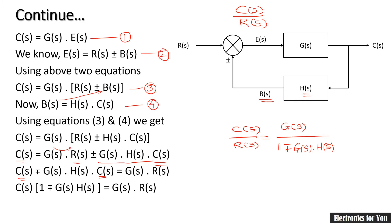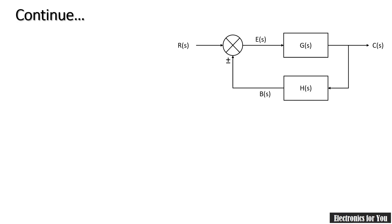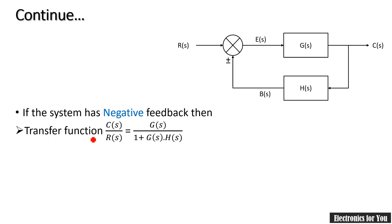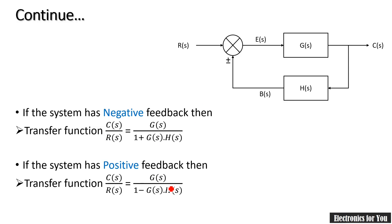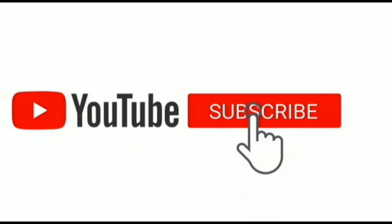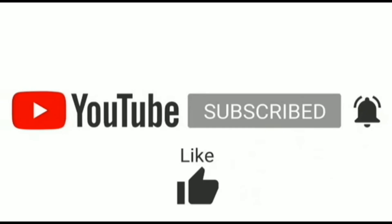This is the transfer function of a closed loop feedback system. For negative feedback, the transfer function is G(S) / (1 + G(S)·H(S)), and for positive feedback the sign is inverted, giving G(S) / (1 − G(S)·H(S)). This derivation is generally applied in the block diagram reduction technique. If you like this video, please subscribe to our channel, press the bell icon for notifications, and like, comment, and share.